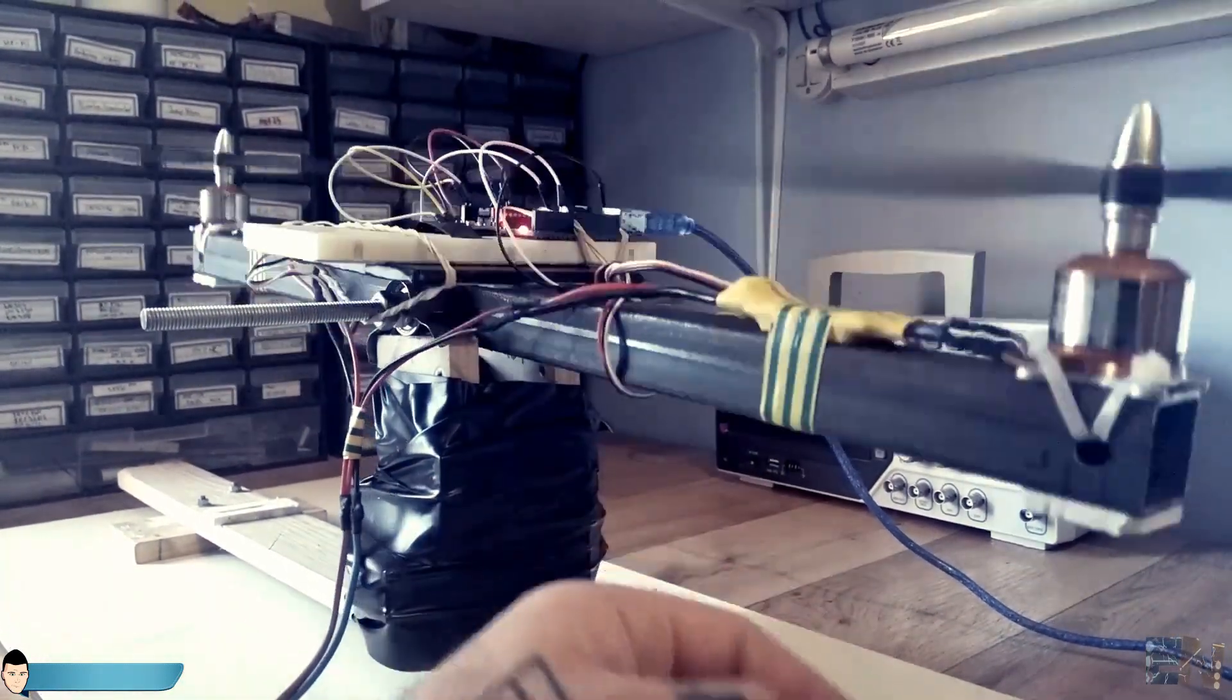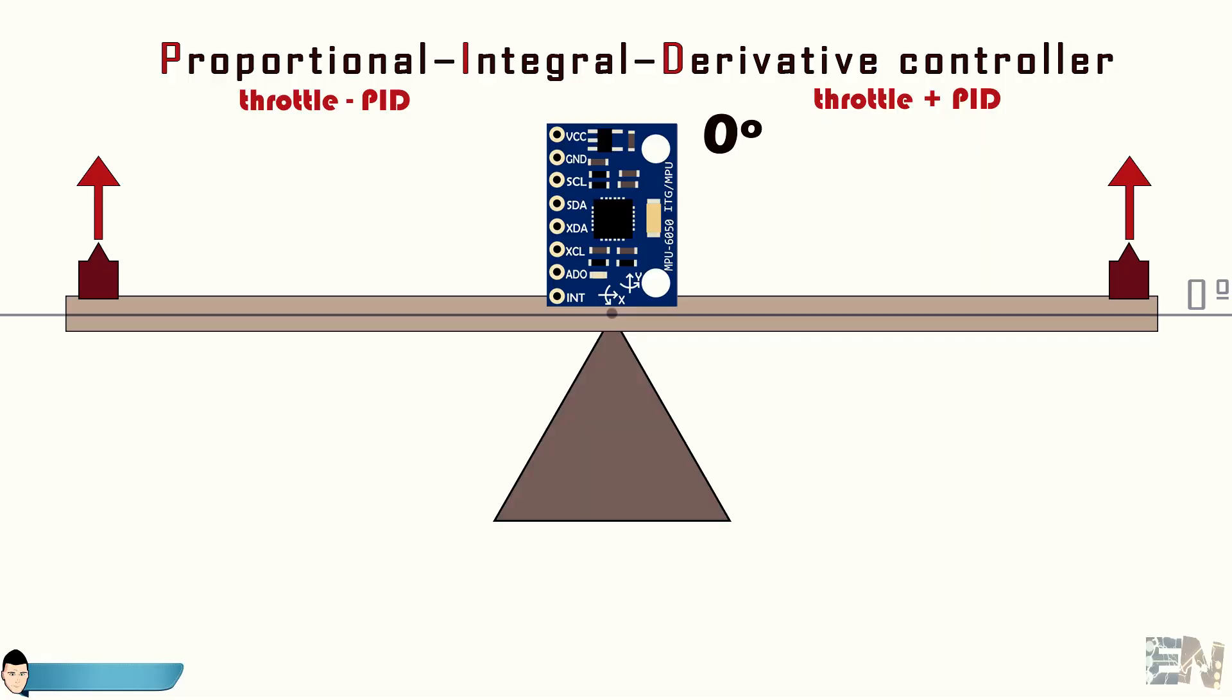These PID constants will change depending of the shape, weight and size of the system. So when we will add the second axis these values will definitely change.